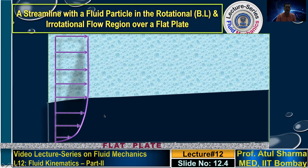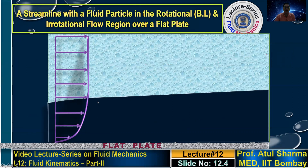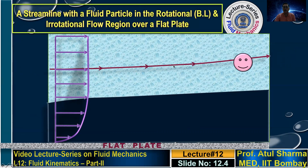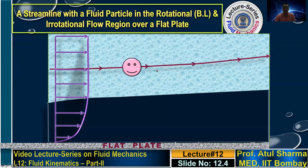Let us consider two different streamlines. A streamline is a line on which the velocity at each point is tangent to it, so a fluid particle moving on a streamline follows it. If you consider a streamline outside the boundary layer, the fluid particle as it moves is not having any rotation, because there is no unbalanced shear force on it. So it is translating without any rotation.